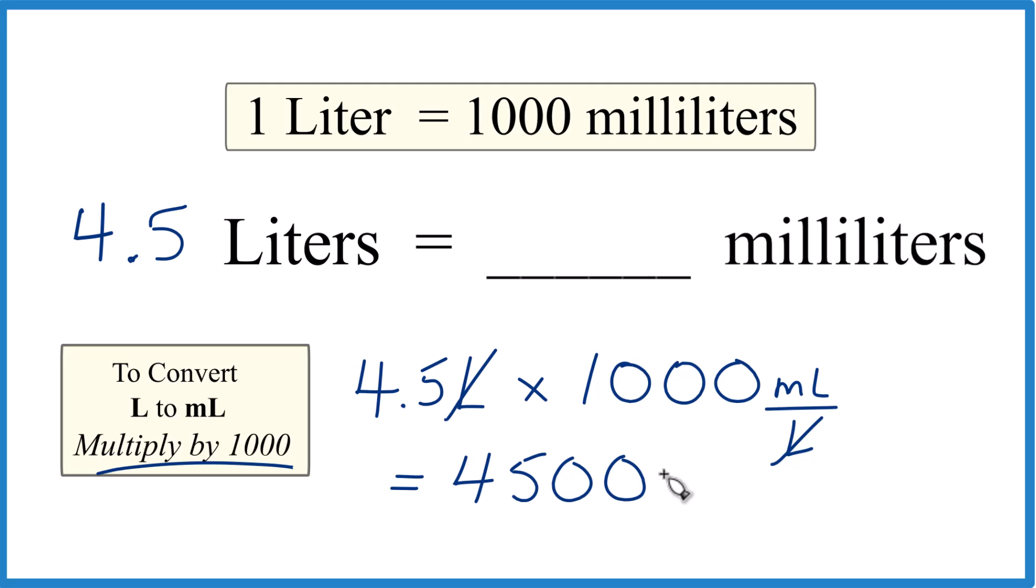And the units, those are going to be milliliters. So in answer to our question, 4.5 liters, when we convert that to milliliters, we get 4,500 milliliters.